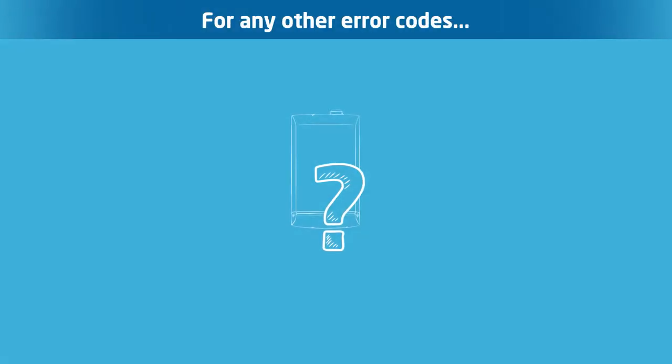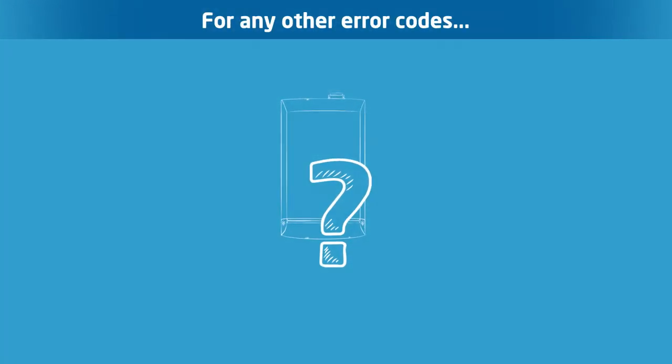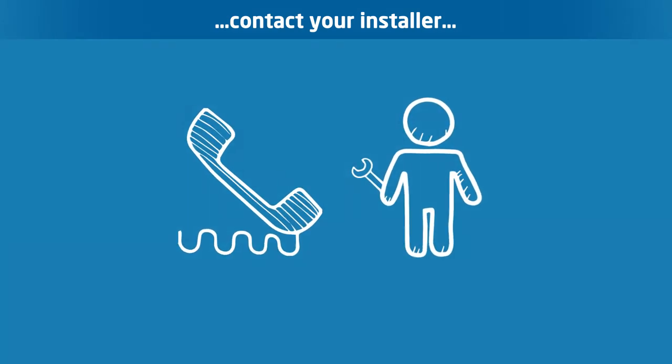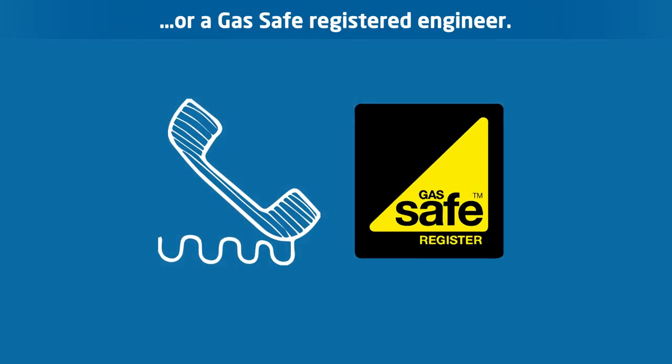For any other error codes you will most likely need to contact your installer or a gas safe registered engineer. For more information please watch our other Baxi Usense videos.